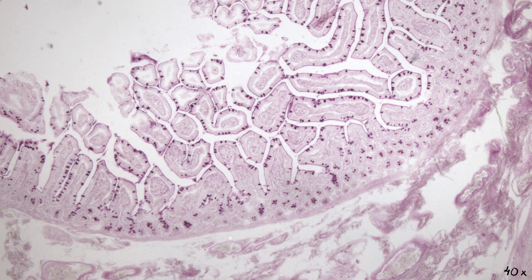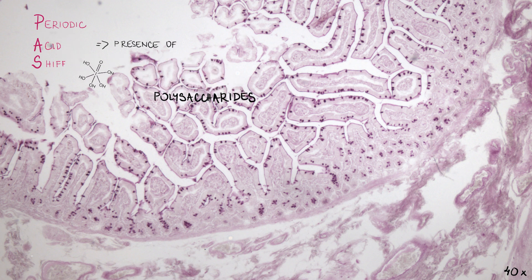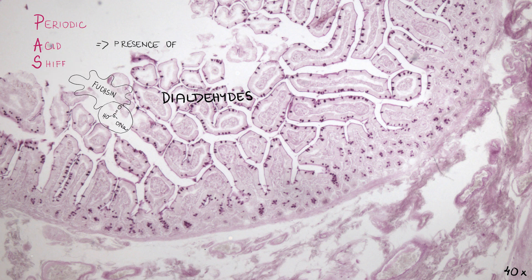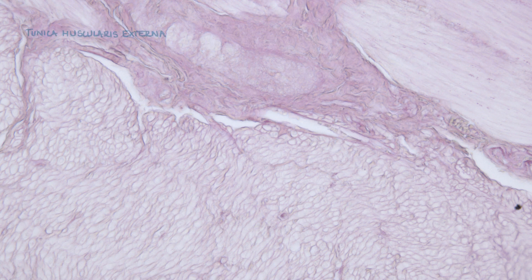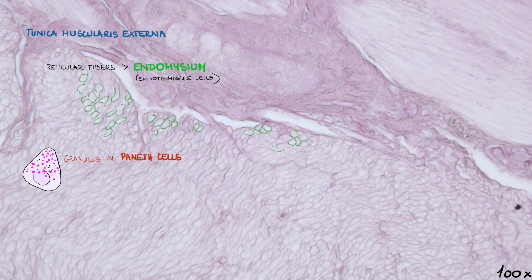The number of goblet cells can be nicely depicted in a section stained by PAS — periodic acid-Schiff — a reaction which detects the presence of polysaccharides. Saccharides are oxidized by periodic acid to form dialdehydes, which then react with the Schiff reagent made of fuchsin and sodium bisulfite. When the reagent binds to aldehydes, the decolorized fuchsin becomes magenta. Alongside goblet cells, everything containing polysaccharides gets stained with PAS, including the glycocalyx on the brush border, basement membranes with their reticular fibers, and endomysium of smooth muscle cells. Paneth cell granules also get slightly stained. The whole section is additionally stained with hematoxylin to visualize other structures.